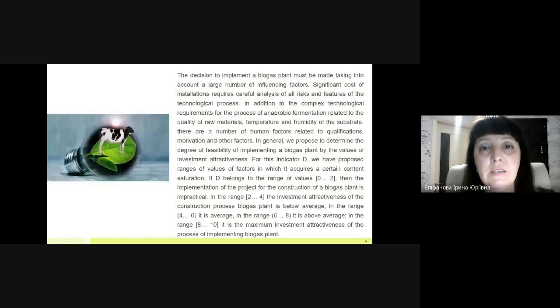The decision to implement a biogas plant must be made taking into account a large number of influencing factors. Significant cost of installation requires careful analysis of all risks and features of the technological process. In addition to the complex technological requirements of the process of anaerobic fermentation related to the quality of raw materials, temperature and humidity of the substrate, there are a number of human factors related to qualifications, motivation and other factors. In general, we propose to determine the degree of feasibility of implementing a biogas plant by the values of investment attractiveness. For this indicator, we have proposed various ranges of values of factors in which it occurs a certain content saturation.